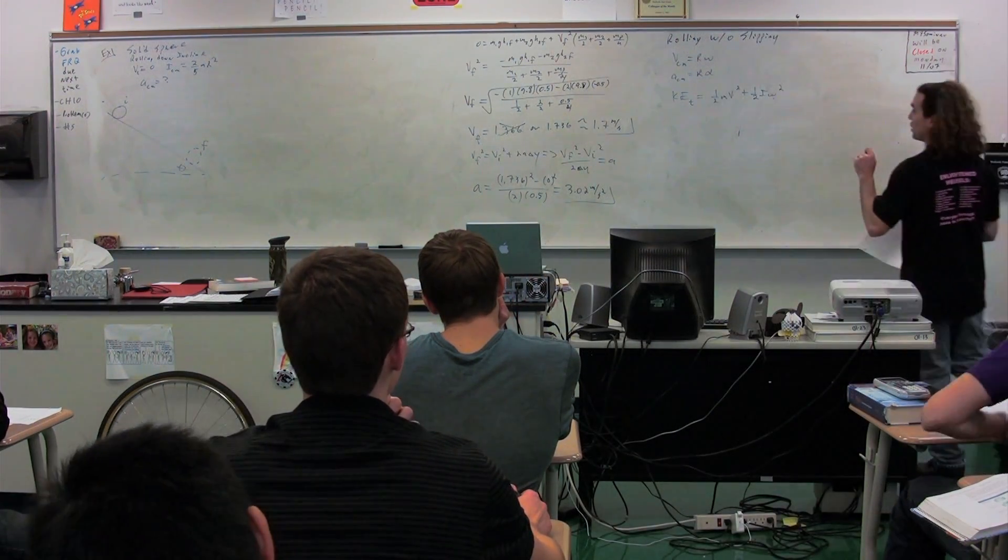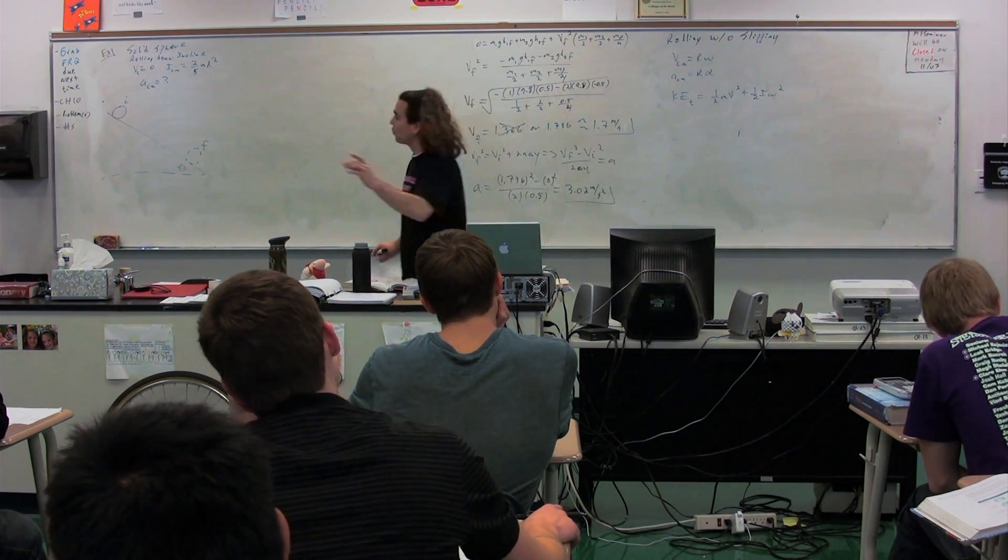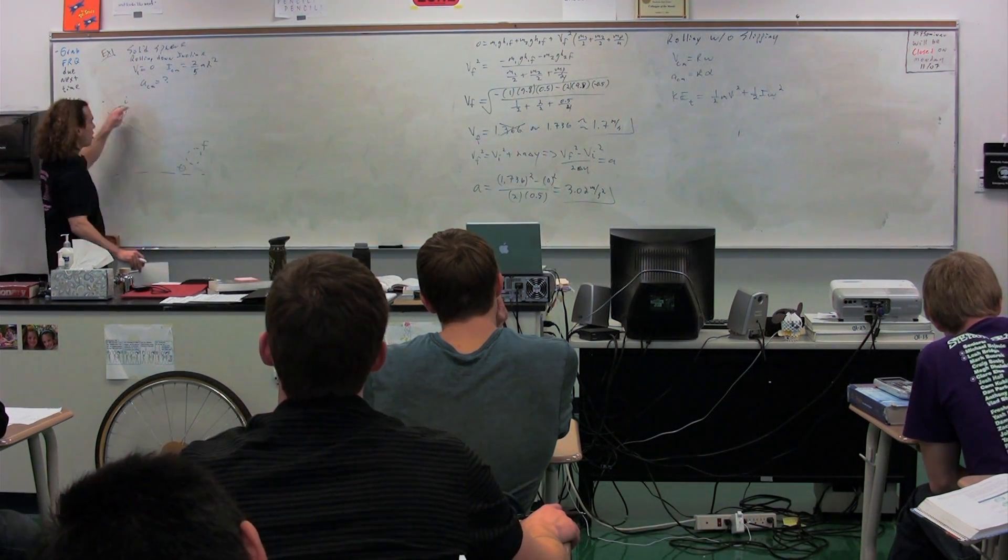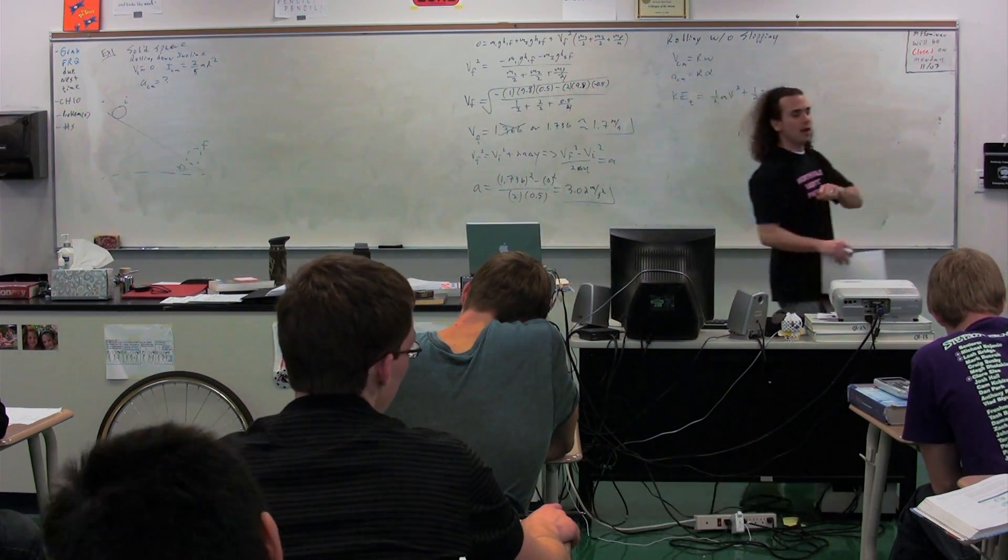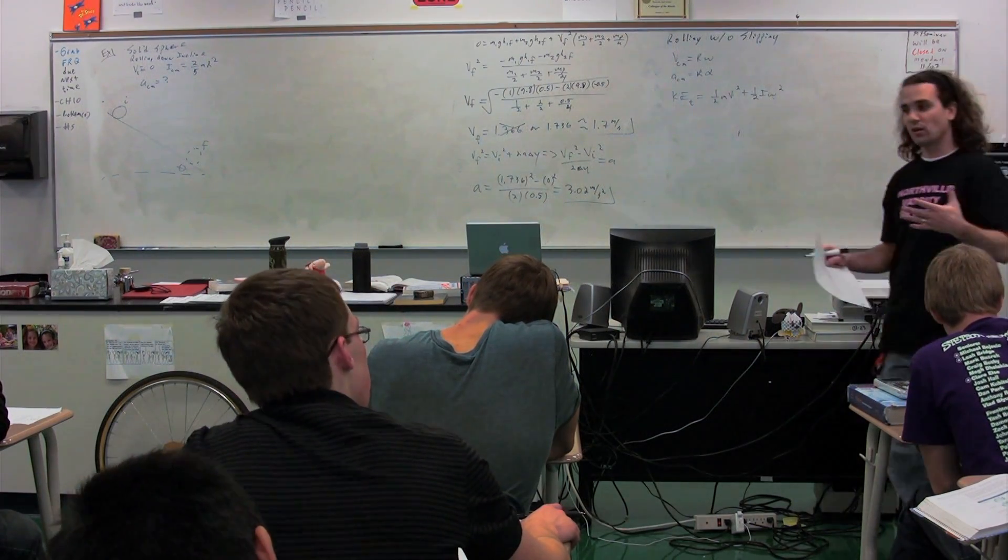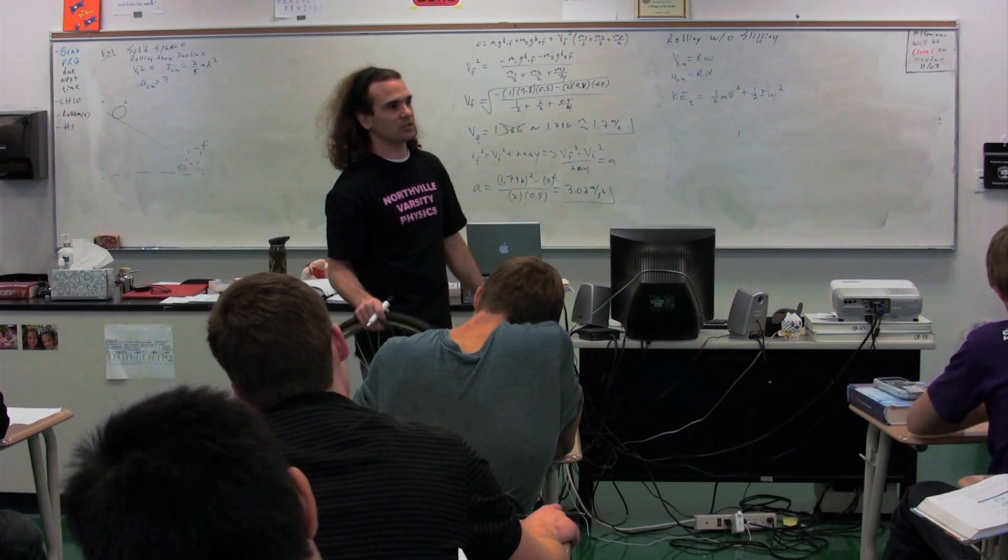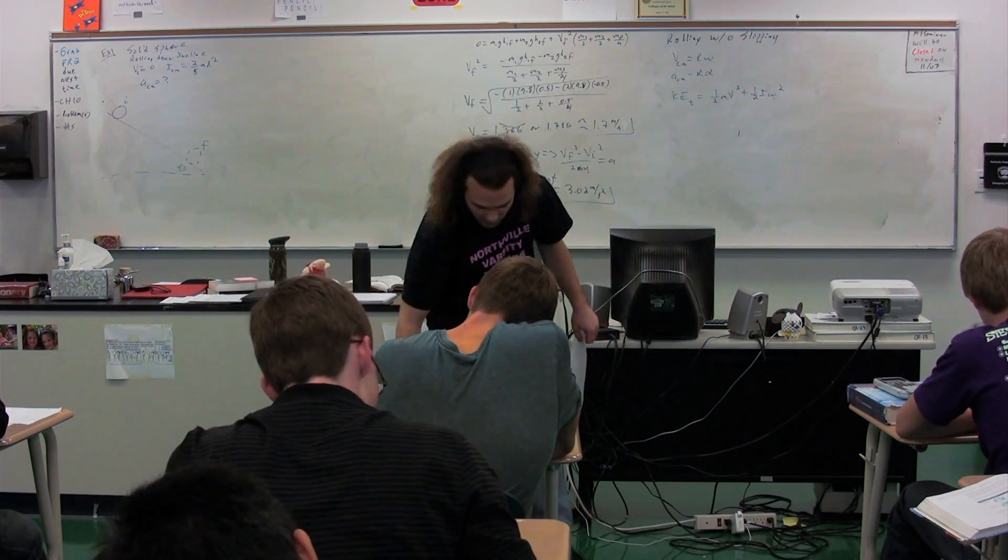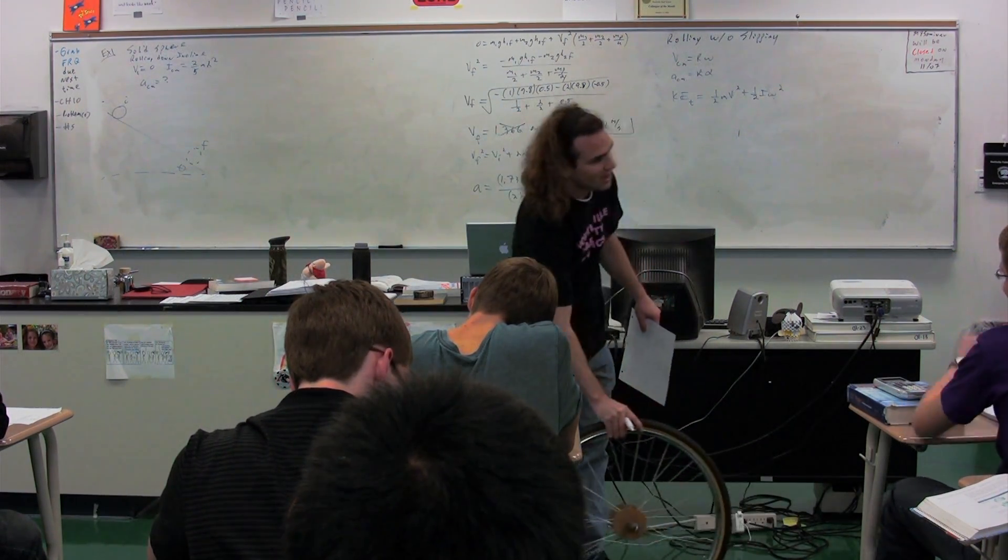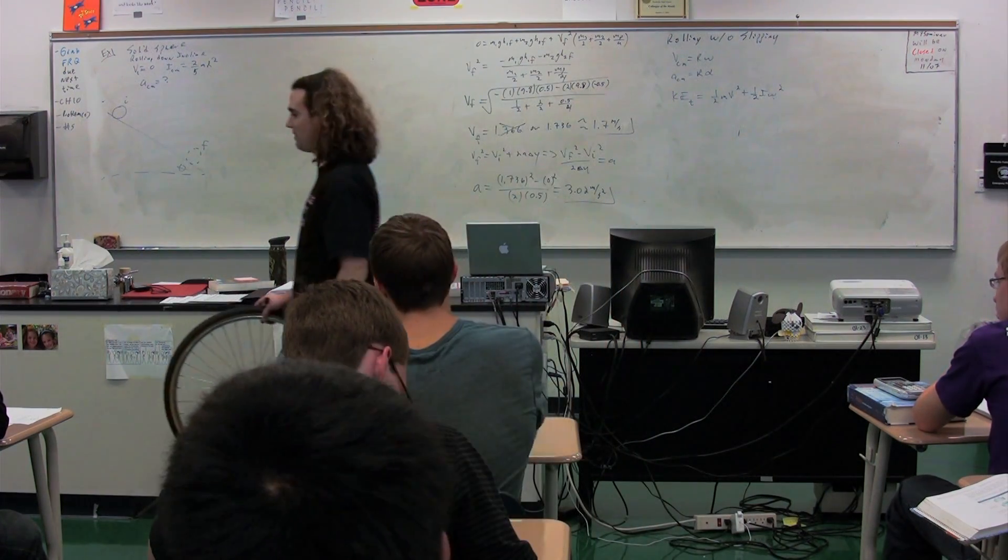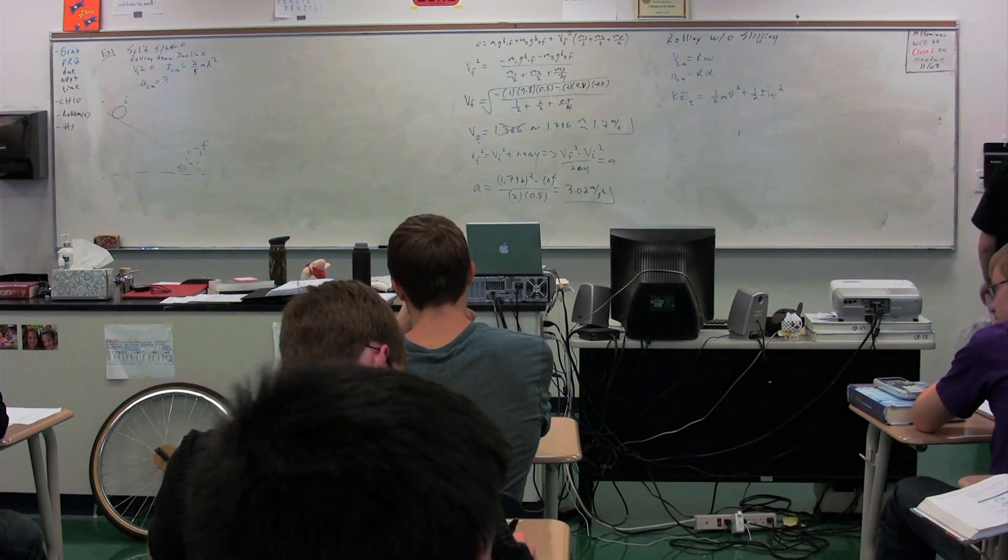So notice in this particular case, we have friction. Friction is going to cause this object to rotate down the hill. However, we don't have sliding, and it's when you have sliding that you have energy transferred from, you have kinetic energy converted into internal energy of the system, and that is why energy is not conserved. But energy is conserved because you only have rolling without slipping.